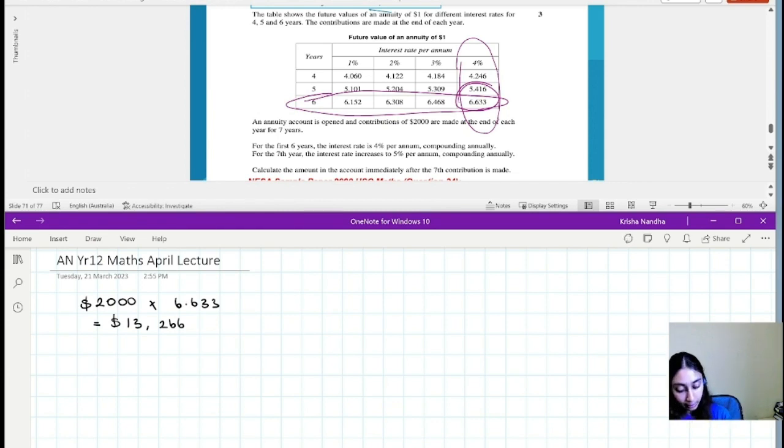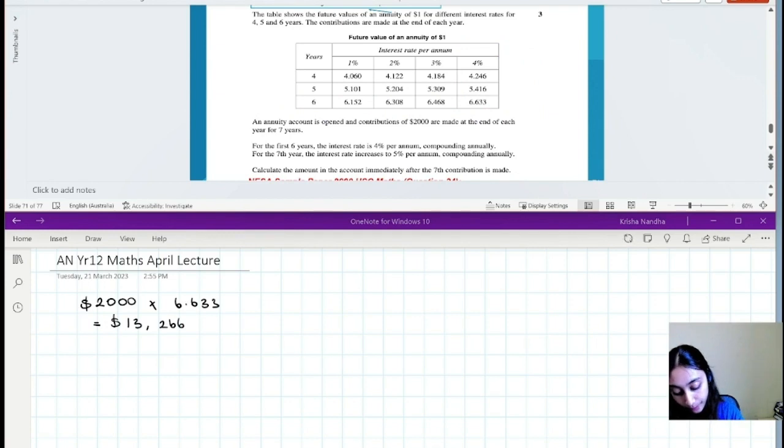But then they add a little twist to it. On the seventh year, the interest rises to 5% per annum compounded annually. Now there's one problem with this - there actually isn't a 5% column.